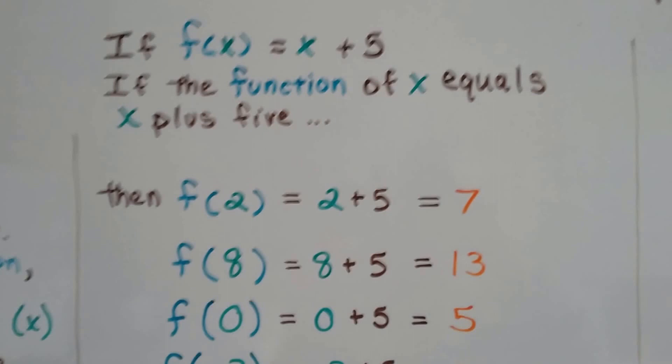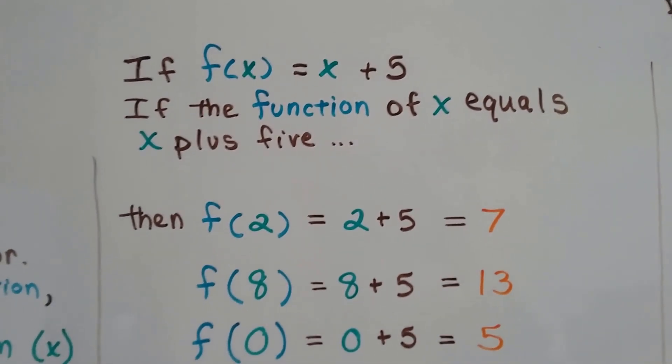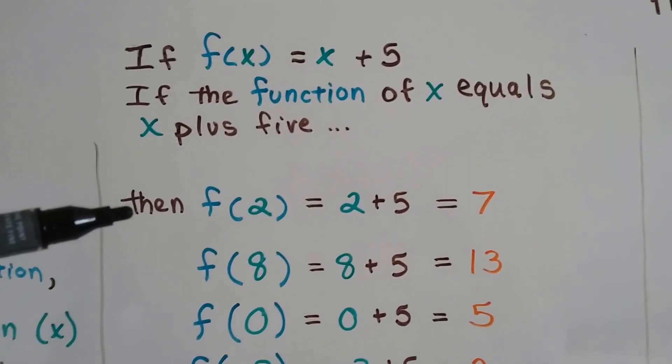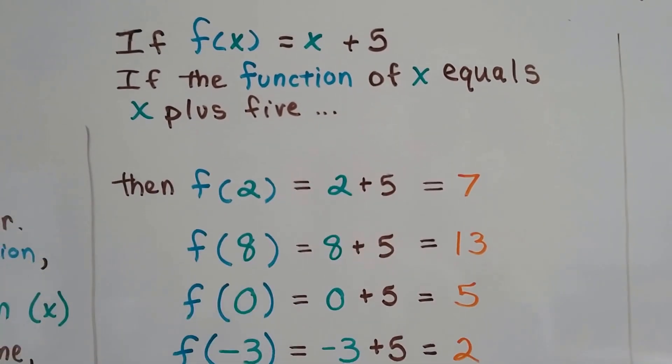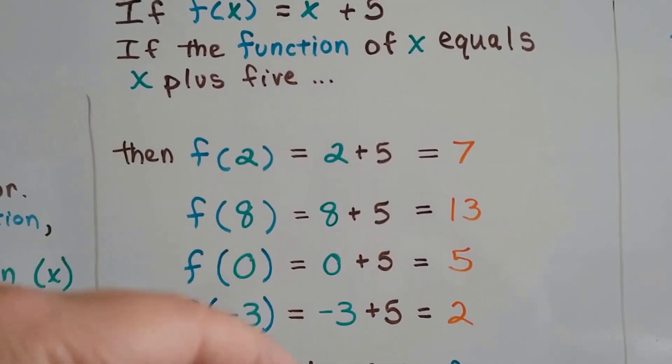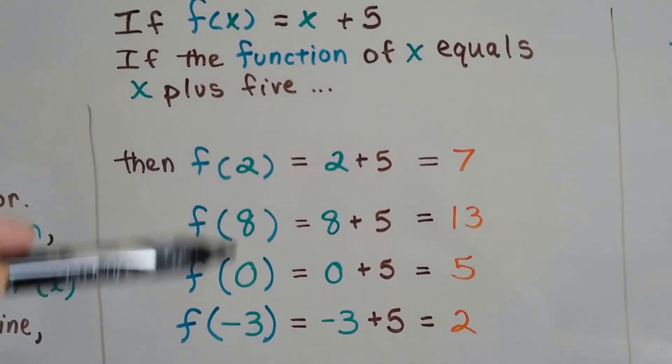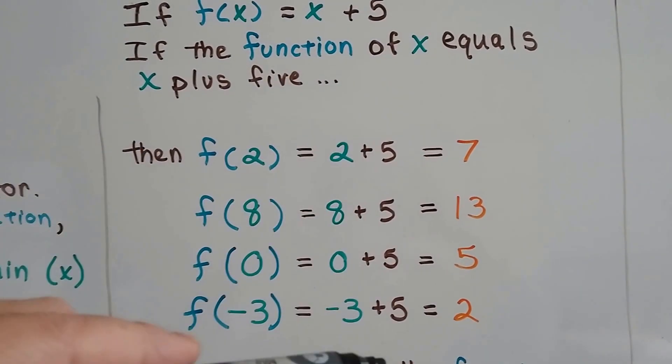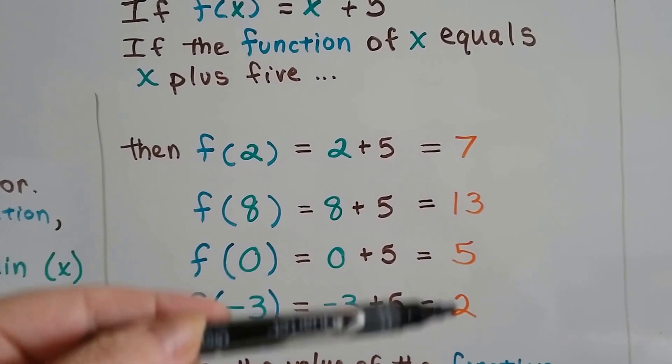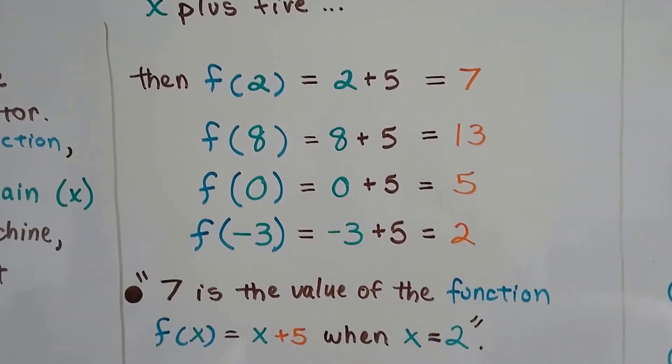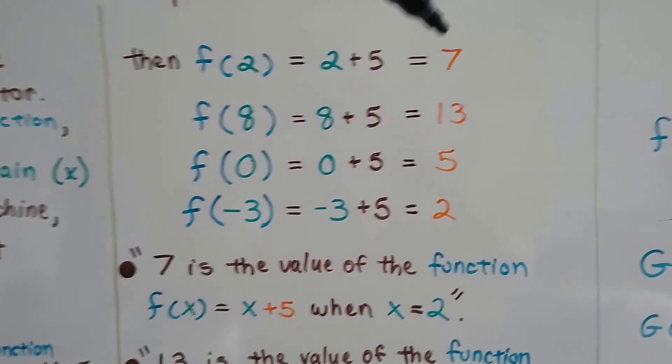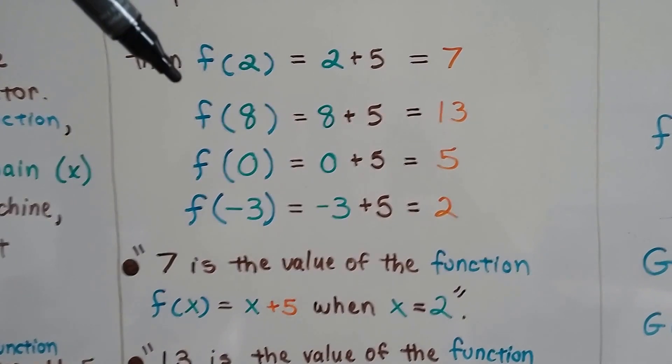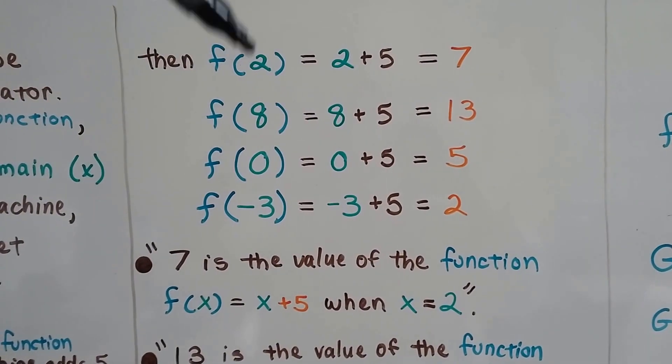So if the function of x equals x plus 5, then the function of 2 equals 2 plus 5, which is 7. And these are our function values, our outputs. So if the function of x was a 2, an 8, a 0, or a minus 3, and we're adding 5, then these would be our function values. You'd read this one as 7 is the value of the function f(x) = x + 5 when x equals 2.